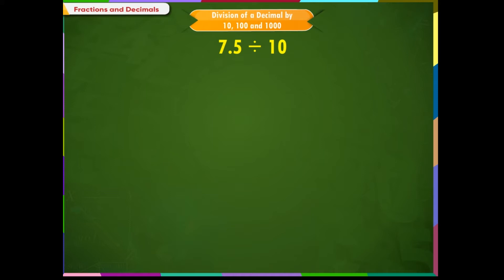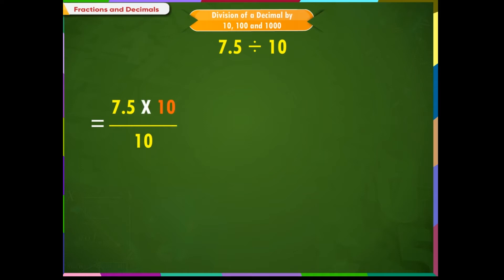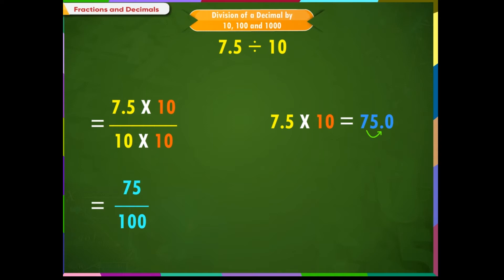7.5 divided by 10. Look at the number of decimal places in the dividend. In this problem, since the number of decimal places is 1, we will multiply the numerator and denominator by 10. Therefore, 7.5 × 10 divided by 10 × 10. We know that while multiplying a decimal number with 10, we shift the decimal point one place towards the right. Thus, we get 75 divided by 100.